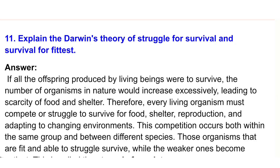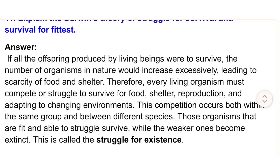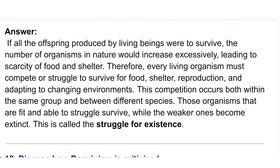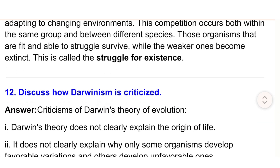11) Explain Darwin's theory of struggle for survival and survival of the fittest. Answer: If all offspring produced by living beings were to survive, organism numbers would increase excessively, leading to scarcity of food and shelter. Every organism must compete to survive for food, shelter, reproduction, and adapting to changing environments. Those that are fit survive; the weaker ones become extinct — this is called the struggle for existence.